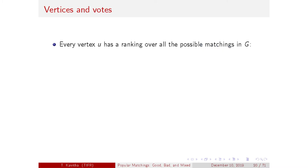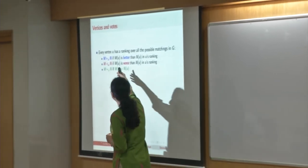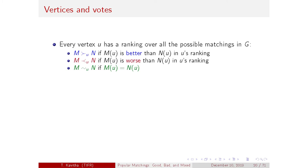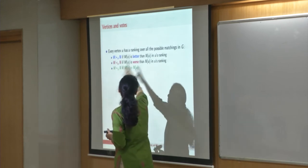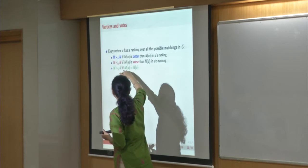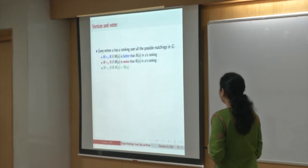The ranking a vertex has over its neighbors naturally extends to a ranking over all possible matchings — similar to ranked voting. Every vertex has a ranking of matchings based on the ranking of its partners in those matchings. It doesn't care about what partners other vertices have; it just looks at its own partner in M versus N. If its partner in M is ranked better than in N, it says it likes M more, and vice versa. Every vertex thus has a ranking over all possible matchings.